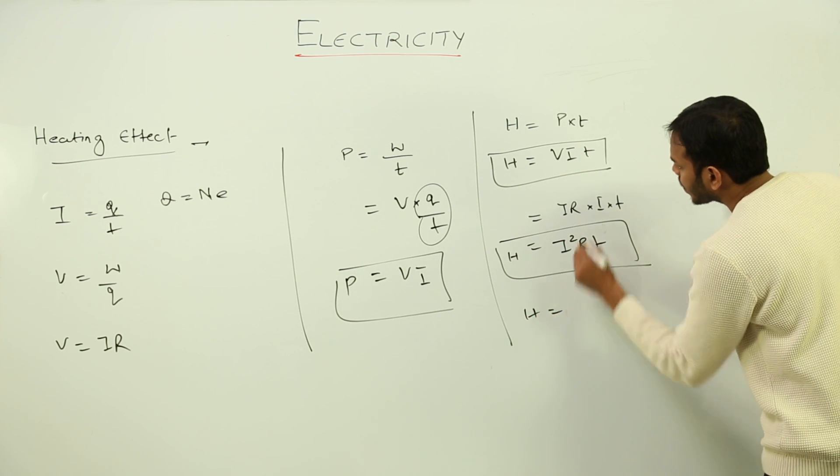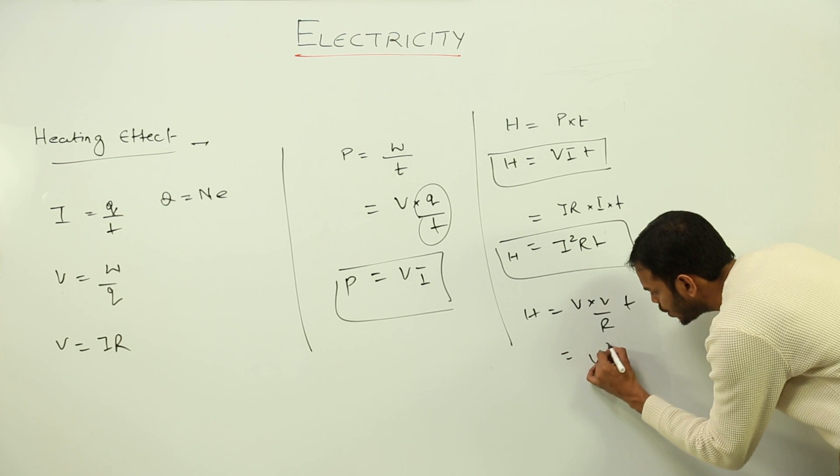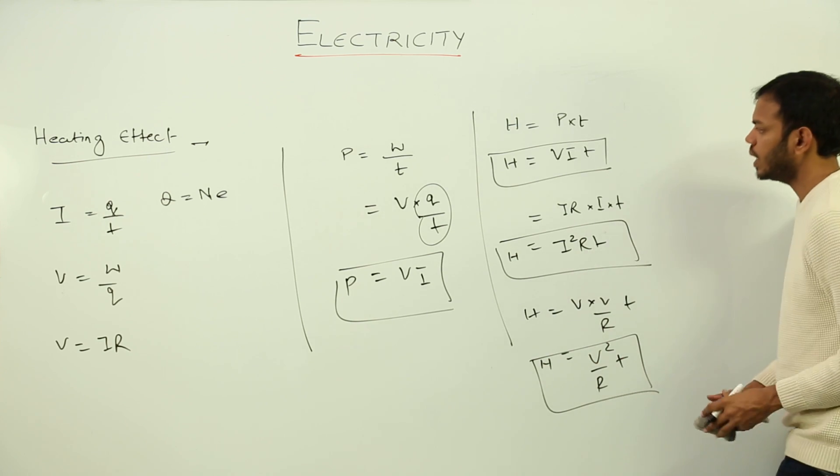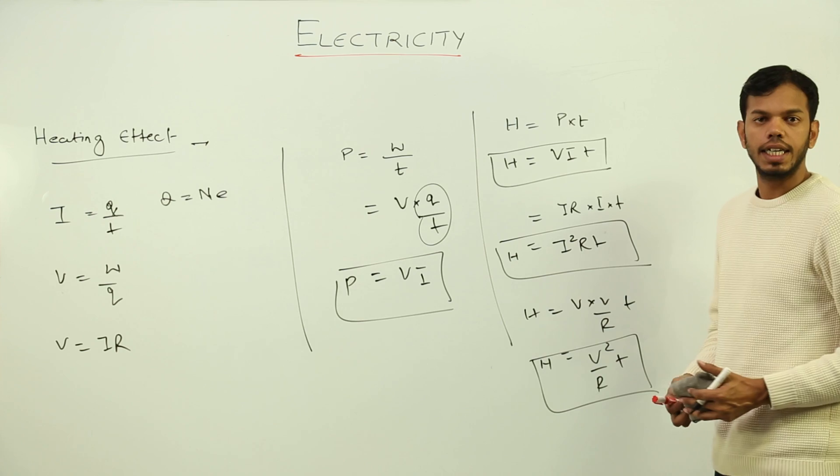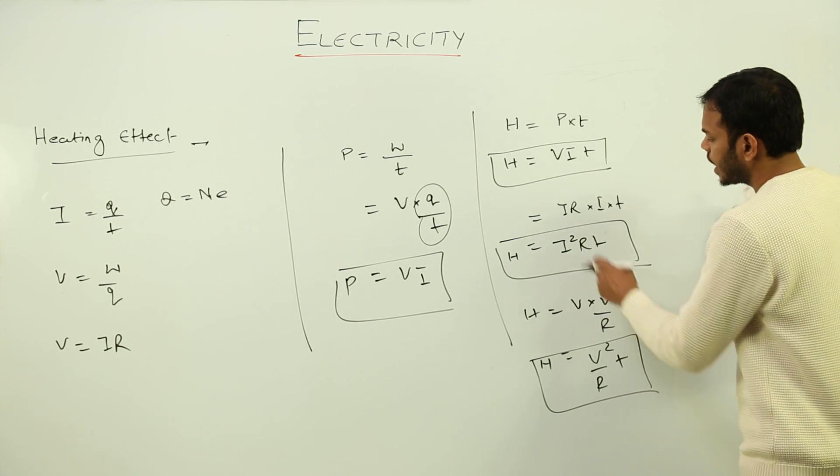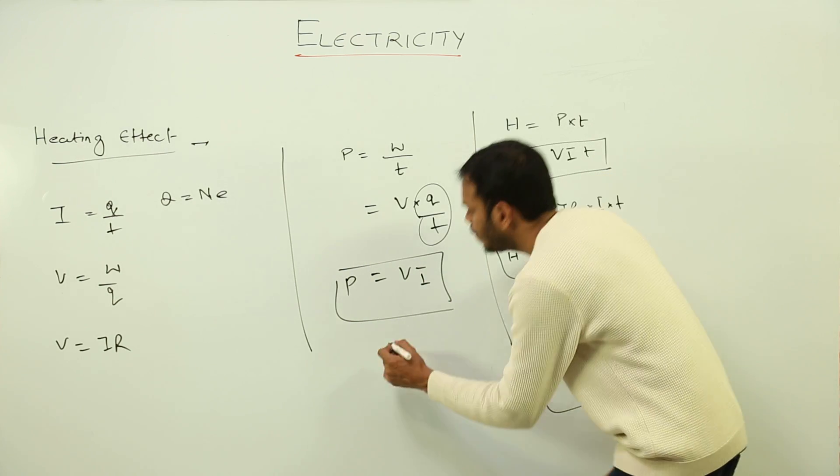I can also put I to be equal to V upon R. So I will get V into V upon R times T. So this will give me V² upon R into T. So we have these three formulas for heating effect or the heat generated in a circuit having voltage, current, and resistance.